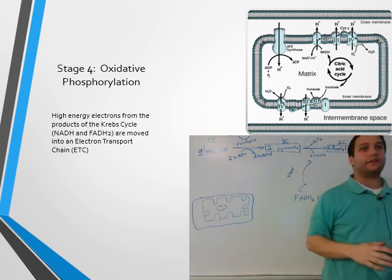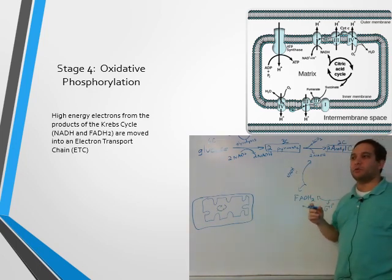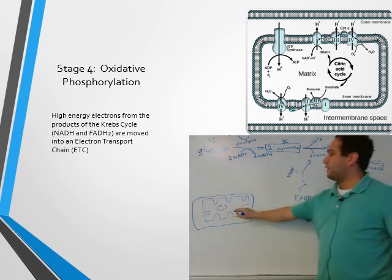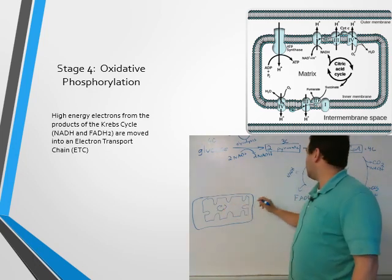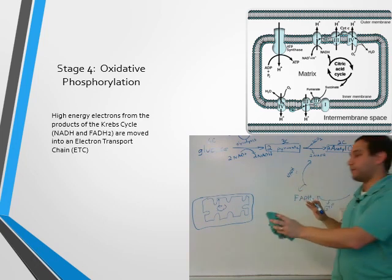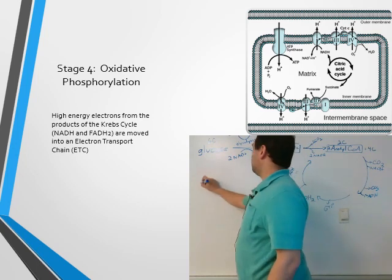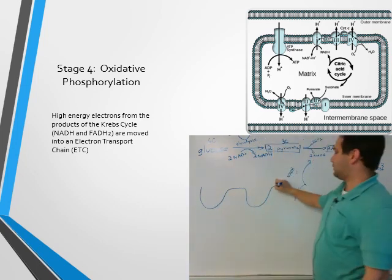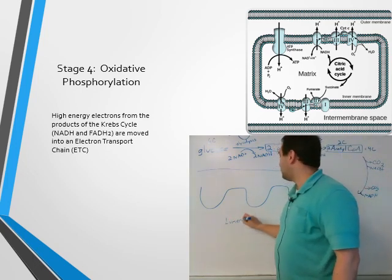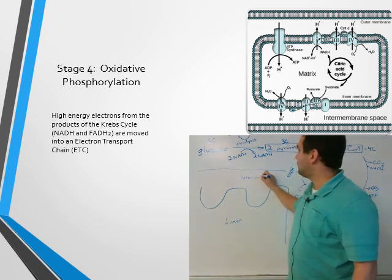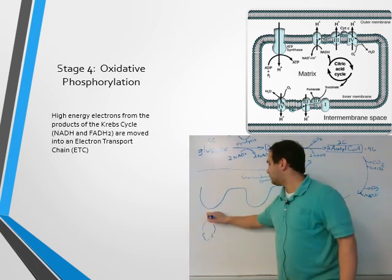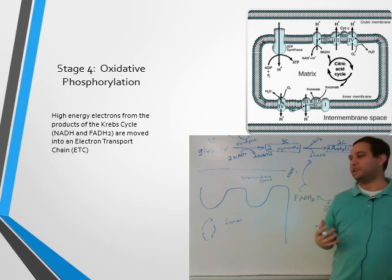Last step — step four: oxidative phosphorylation. This is where you take high energy electrons from the Krebs cycle and use them to power the electron transport chain. We've made NADH and FADH2 here in the mitochondrion, and those energy transport molecules are going to go up to the membrane. Zooming in: here is the lumen on the inside, and this is the intermembrane space. Down here is where we have the Krebs cycle, which has produced a bunch of NADH and FADH2.